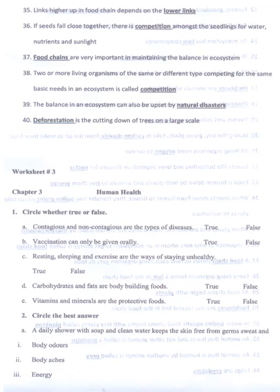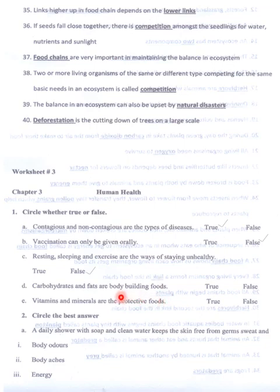Human Health — circle whether true or false. Contagious and non-contagious diseases are types of diseases — yes, this is true. Vaccinations can only be given orally — this is false. Resting, sleeping and exercise are ways of staying unhealthy — this is false. Carbon dioxide and fats are bodybuilding foods — no, proteins are the bodybuilding foods. Vitamins and minerals are the protective foods — yes.